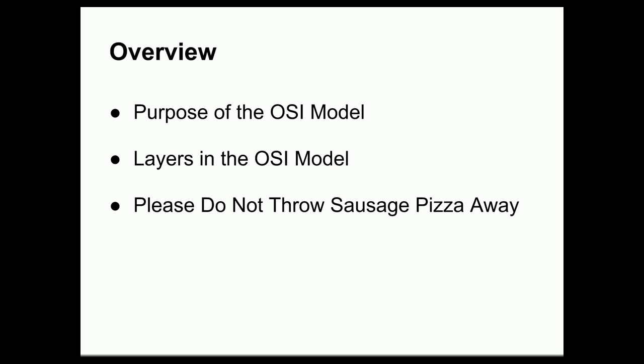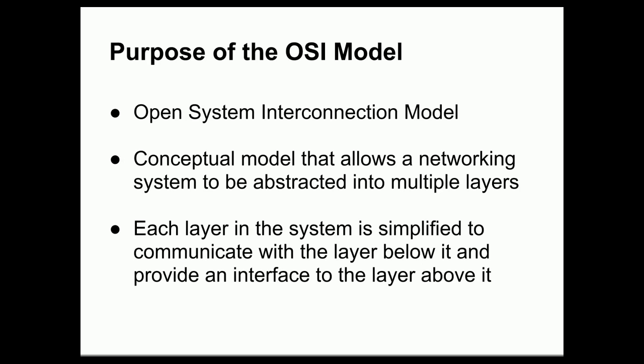The purpose of the Open System Interconnection model, or OSI model, is to provide a conceptual model that allows a networking system to be abstracted into multiple layers. This is a conceptual model whose purpose is to simplify the way that we design, communicate, and think about how a networking system would be implemented, by separating out all the details into discrete layers.